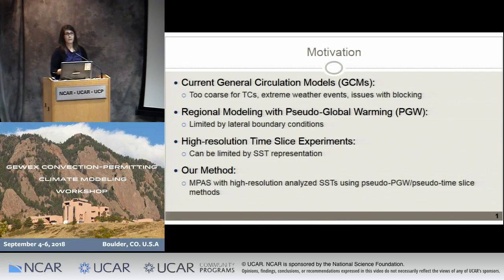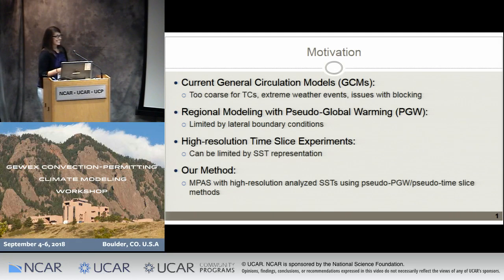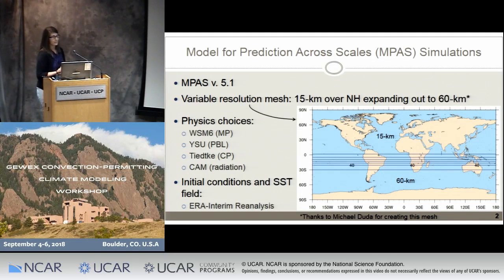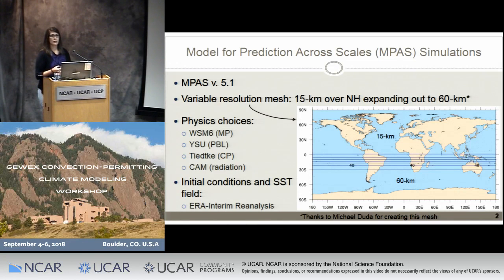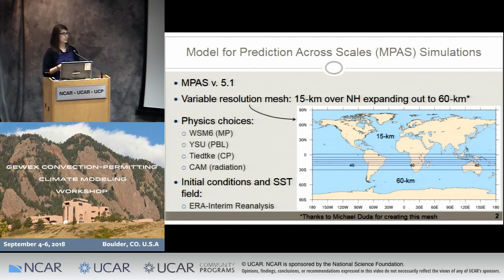We're using MPAS, which is a global atmosphere-only model, so that allows us to prescribe high-resolution SSTs. For our climate change experiments, we're doing pseudo-global warming and pseudo-time-slice experiments. We're using MPAS version 5.1 with a variable resolution mesh: 15 kilometers over the entire northern hemisphere expanding out to 60 kilometers elsewhere. Since 15 kilometers is not convective-permitting, we do have a convective parameterization scheme — we chose Tiedtke — mainly because of its inclusion of convective momentum transport, which is important for the representation of tropical cyclones. We did some preliminary testing with a 60-kilometer uniform mesh to refine these physics choices further.